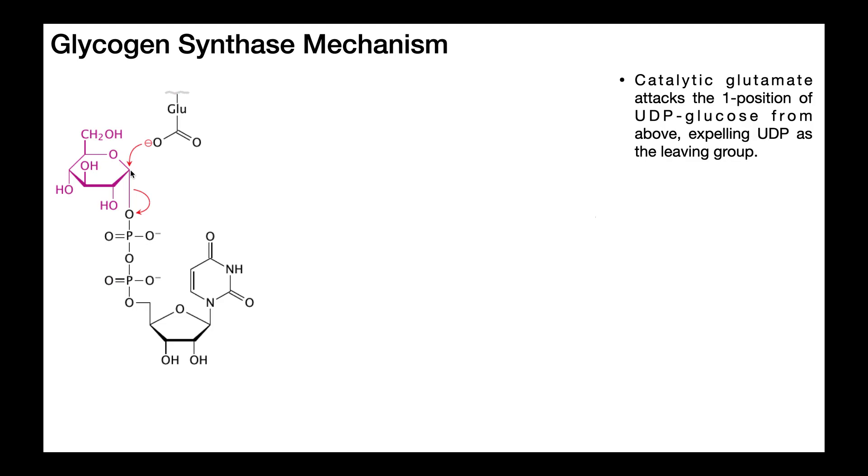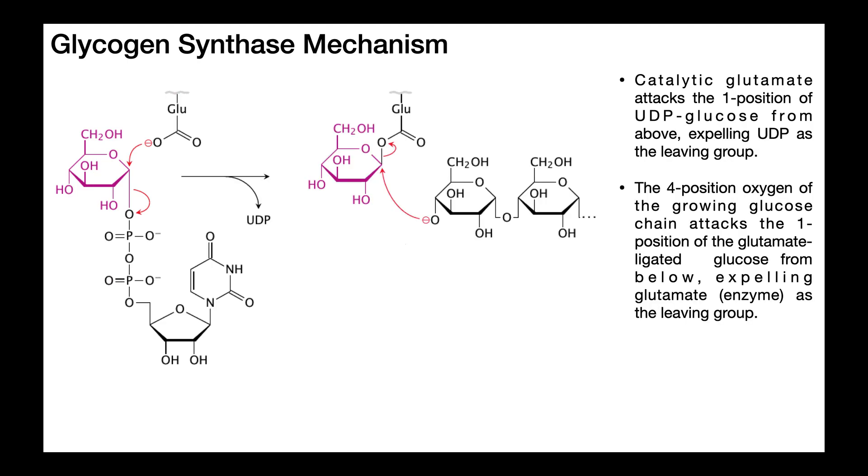This is an example of an SN2 reaction. Glutamate here is going to attack this carbon, and you're going to have loss of a leaving group. This is an SN2 type of mechanism from organic. Now that glutamate becomes covalently attached to that one position from the top.